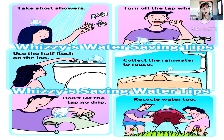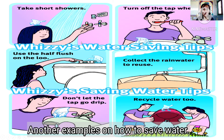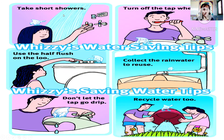So these are some examples of how to save water. Another example: take short showers, use half flush, don't let the tap drip, recycle water, and collect rainwater to reuse. So if it is raining, you collect the water and reuse it again.